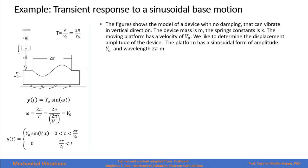The device is placed over a moving platform that has a velocity of v sub zero. We would like to determine the amplitude of the response of the device if the platform has an amplitude of y sub zero and a wavelength of 2π. We see that the period will be the distance over the velocity.